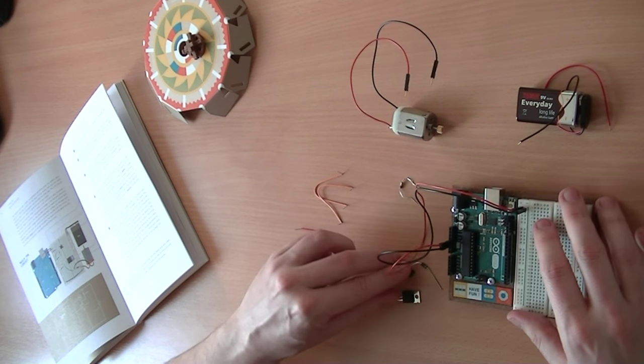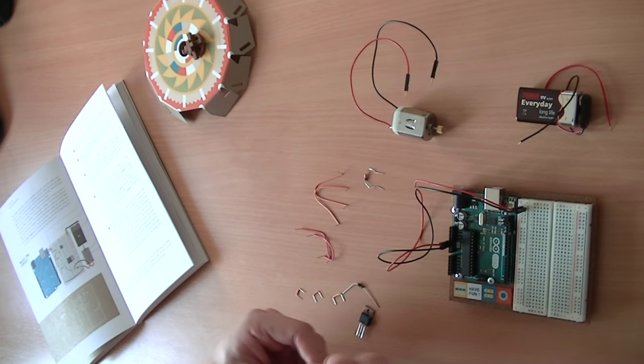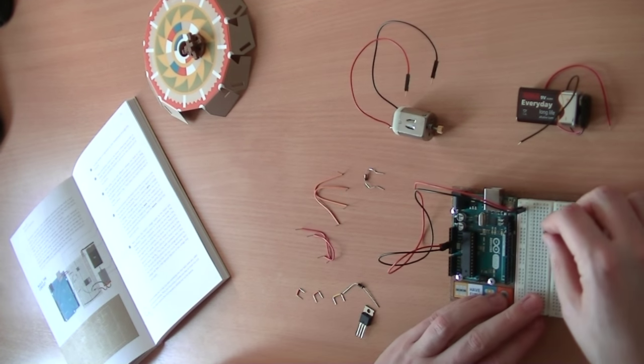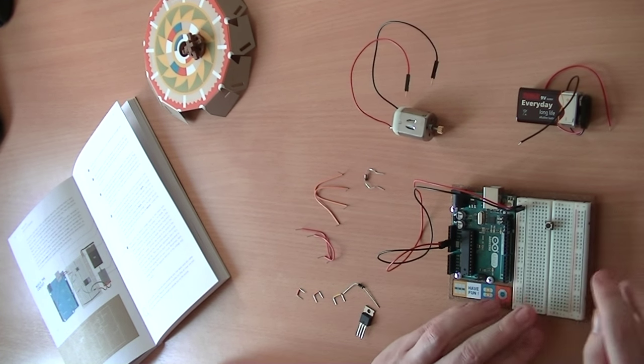And then we're going to connect a button, so let's do our actual switch first. So we'll put our button around about rows 5 to 7, make sure that is plugged in nicely.